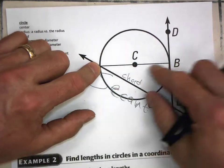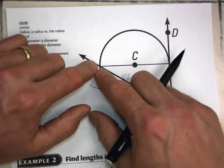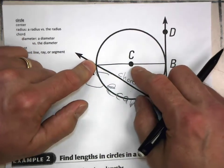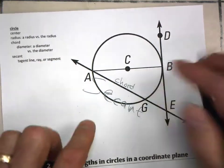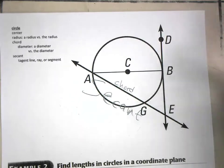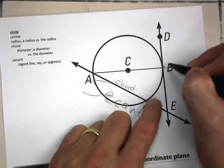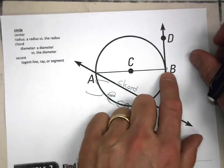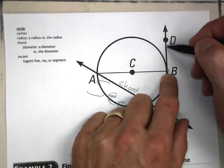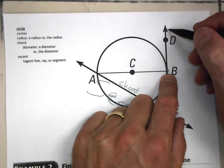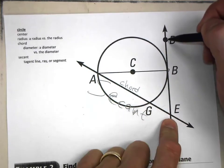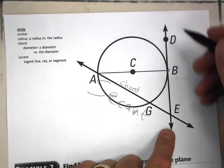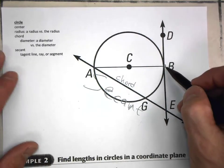A diameter is also a chord because it goes from one side of the circle to the other and passes through the center. Here's another line that intersects the circle at only one point — that is a tangent line. It could be a tangent ray or a tangent segment, but the key point is it intersects the circle only at one point.